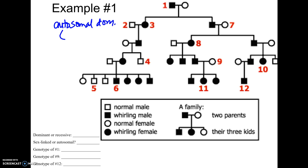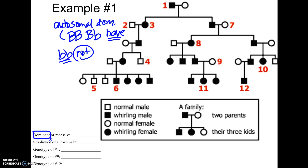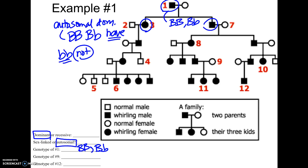Now that you know this trait is autosomal dominant, BB and Bb are the possibilities for a person that has the trait, and bb would be a person that does not have the trait. What's the genotype of person 1? They have the trait and all their kids have it, so it's possible they're BB or Bb — honestly you really don't know, but since both their kids have it, you might think BB. The genotype of person 9: they do not have the trait, so person 9 has to be bb. And person 12 has the trait but their parent is bb, so they have to be Bb.